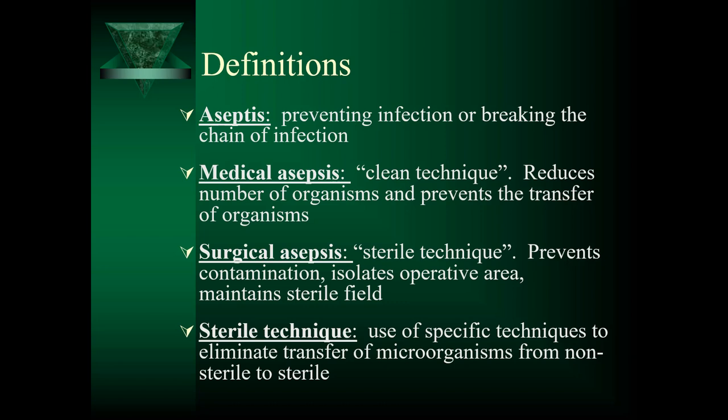On to the topic of the week, which is asepsis. The practice of asepsis includes all the activities we can use to prevent infection or break the chain of infection. There are two categories of asepsis: medical asepsis and surgical asepsis. Medical asepsis is the use of clean technique, involving all procedures and practices that reduce the number and transfer of pathogens. Examples include performing hand hygiene and wearing gloves.